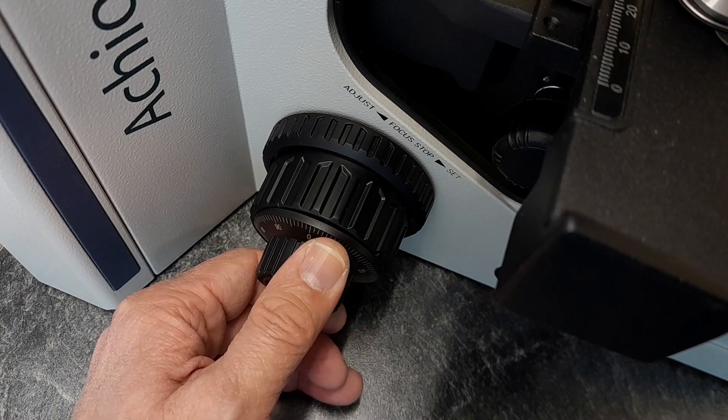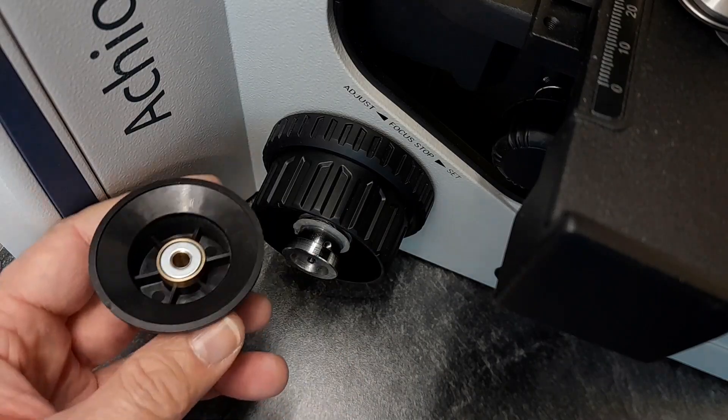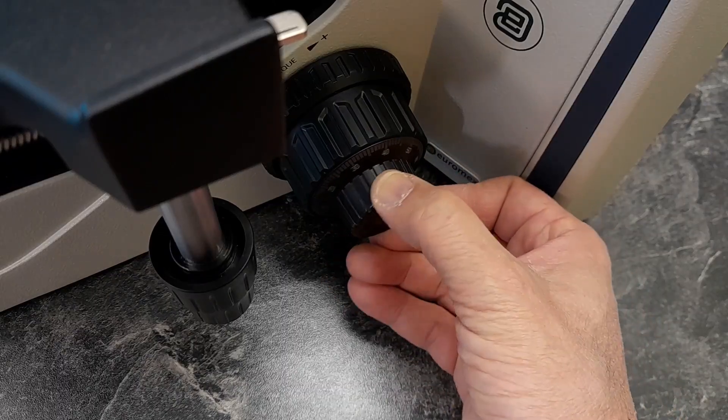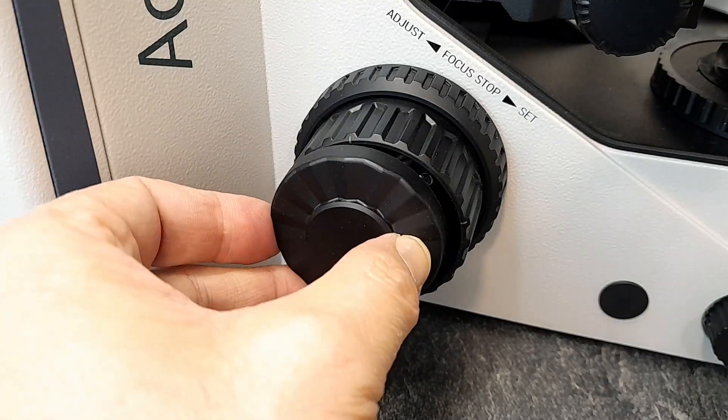And then you can have a coarse and a fine focus like pretty much every microscope has that. There's a slight difference though because the plate covering the fine focus can be exchanged so depending on whether you're right-handed or left-handed or on your personal preferences you are able to exchange the plate and this allows you either to control the fine focus with your right hand or your left hand as you like it.